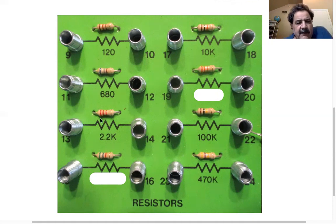Here we have red, red, red, which is 2, 2 times 10 to the 2. So 22 times 100 is 2,200, and so that's 2.2K, 2,200 ohms or 2.2 kilohms.